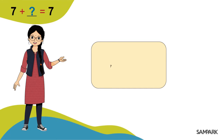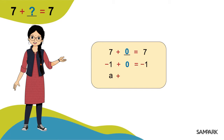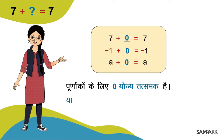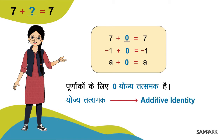इसी प्रकार, साथ में कौन से पूनांक जोड़ने पर योगफल साथ मिलता है? शाबाश! जीरो! तो देखा आपने, किसी पूनांक ए के लिए ए प्लस जीरो = ए होता है। यानी पूनांकों के लिए योज्य तत्समक हुआ जीरो। और योज्य तत्समक को इंग्लिश में कहते हैं Additive Identity। बिल्कुल ठीक!